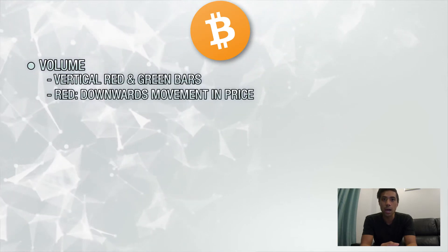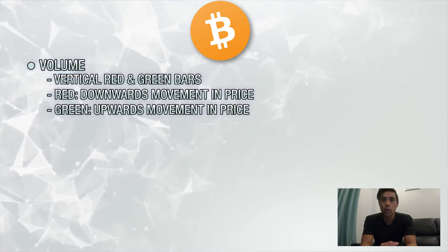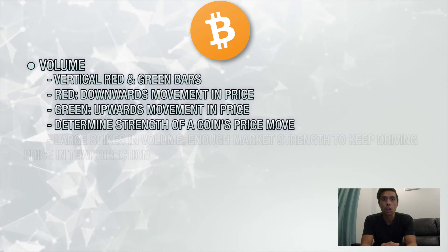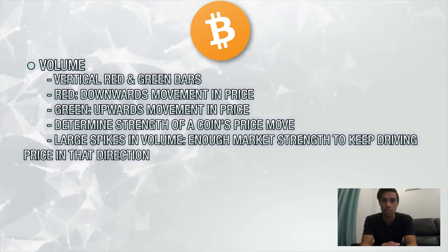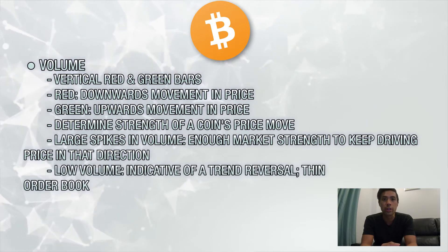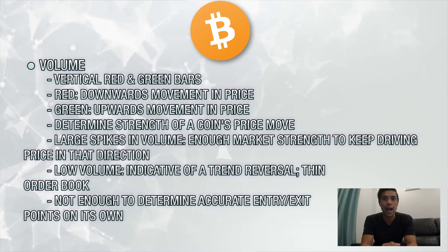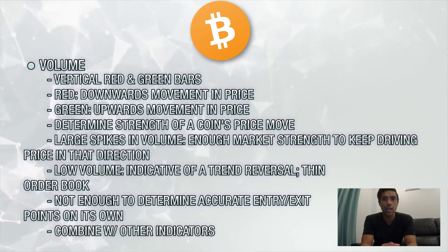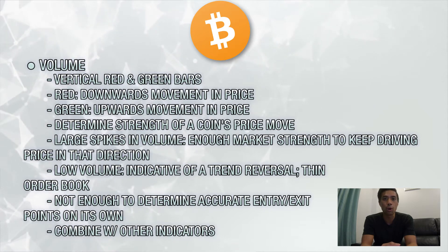Red represents a downwards movement in price, and green represents an upwards movement in price. Traders use the volume indicator to determine the strength of a particular coin's price move. Large spikes in volume tell us there's enough market strength to keep driving price in that particular direction, while low volume may be indicative of a trend reversal due to a thin order book. The volume indicator alone isn't enough to determine accurate entry or exit points, but combined with other indicators, it can increase your likelihood of making the right decisions at the right time, meaning more profits in the long run.